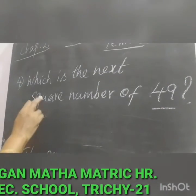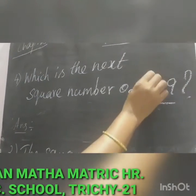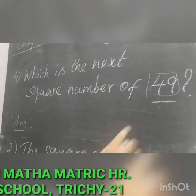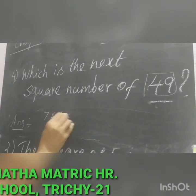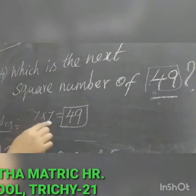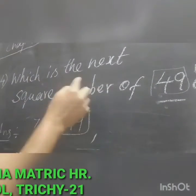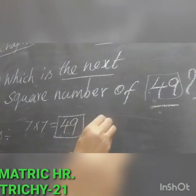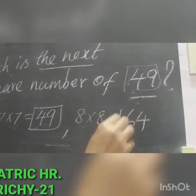The fourth question: which is the next square number after 49? 49 means 7 multiplied by 7 — so 49 is the square of 7. The next number after 7 is 8, and 8 multiplied by 8 is 64. So the next square number after 49 is 64.